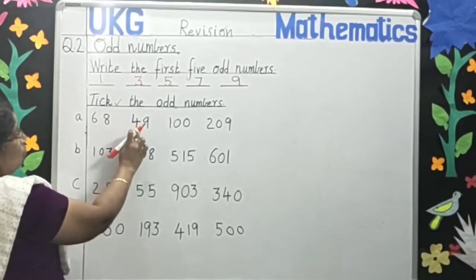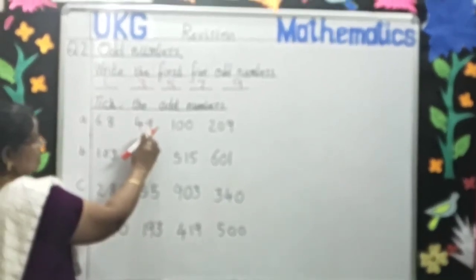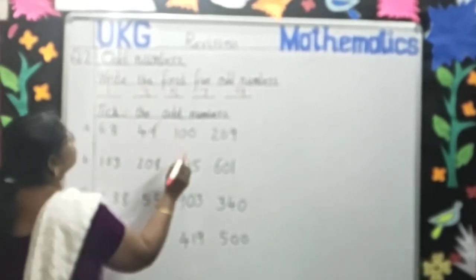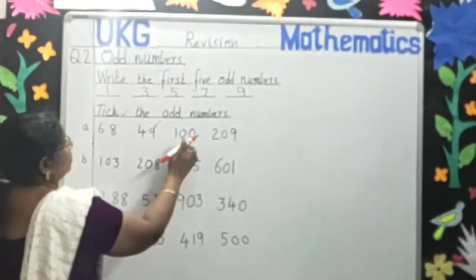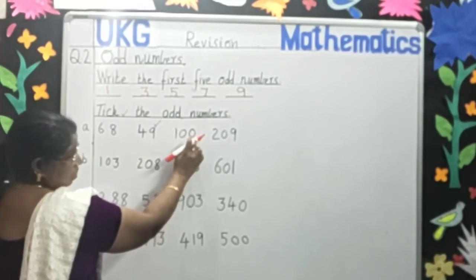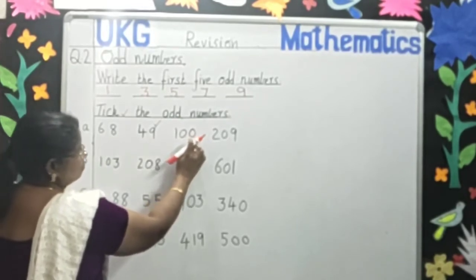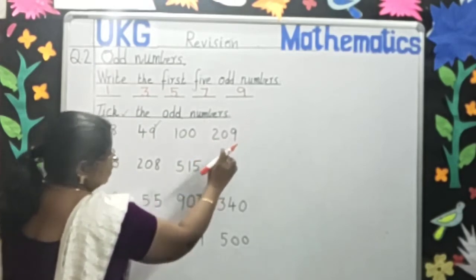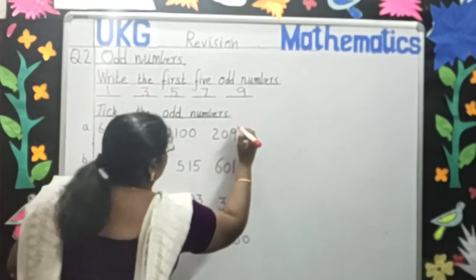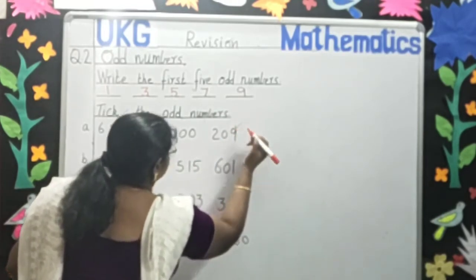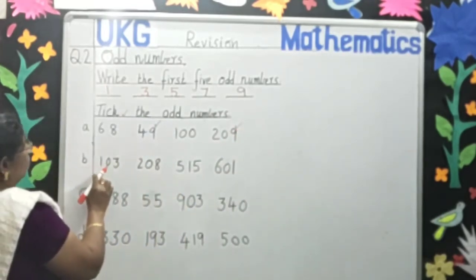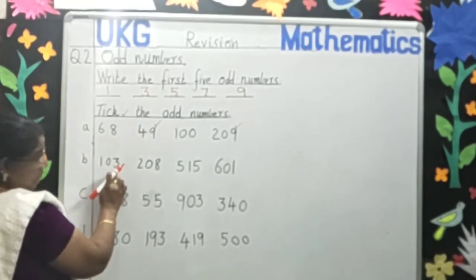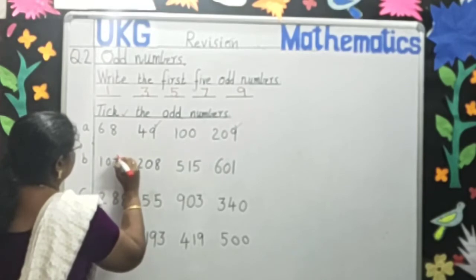No. Forty-nine. Nine is the odd number? Yes. We will put the tick. One hundred. Zero is the last number. Zero is the odd number? No. Two hundred and nine. Nine is the odd number? Yes, put the tick. One hundred and three. Three is the last number. Three is the odd number? Yes, put the tick.